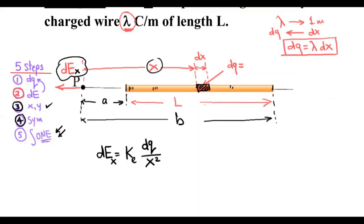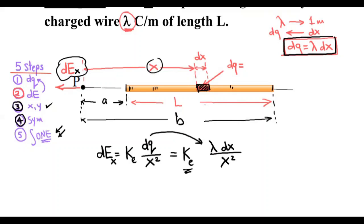Step five: we put our function in only one variable. We substitute dq = lambda · dx, so the electric field becomes dE = ke · lambda · dx / x². The constants ke and lambda are taken outside the integral, leaving one variable: x.